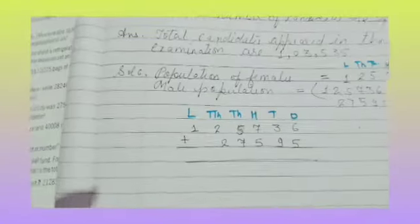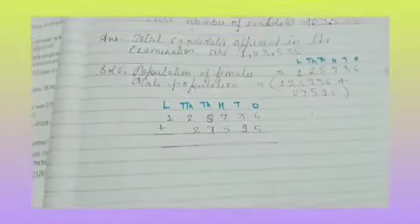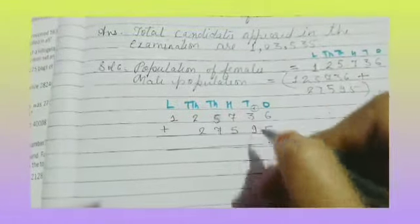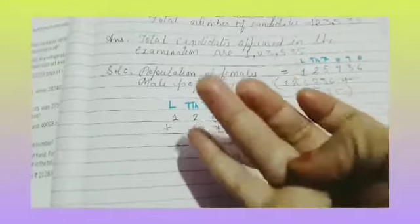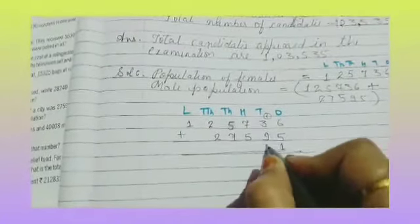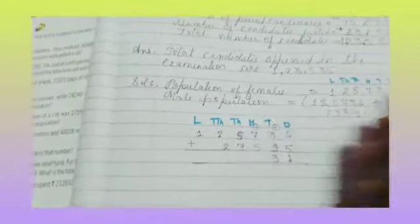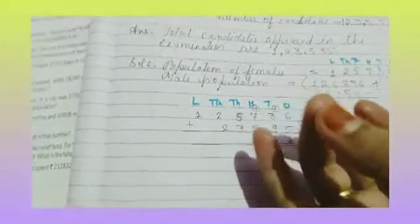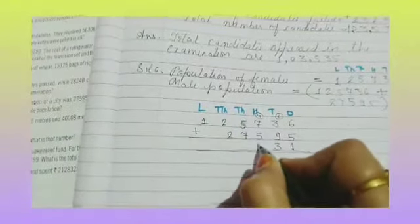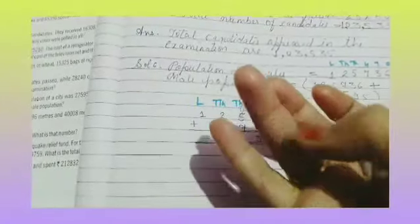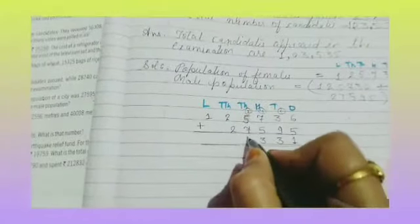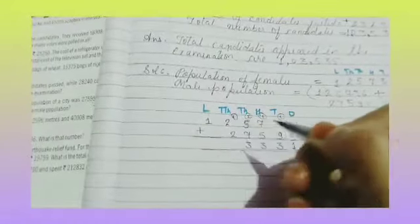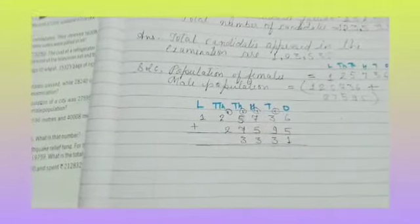Children: 5 plus 6 gives 11. Write 1, carry 1. 3 plus 1 is 4, plus 9 gives 13. Write 3, carry 1. 7 plus 1 is 8, plus 5 gives 13. Write 3, carry 1. 5 plus 1 is 6, plus 7 gives 13. Write 3, carry 1. Then 2 plus 1 is 3, plus 2 is 5, and 1. So: 1,53,331.